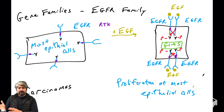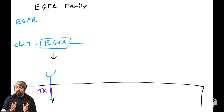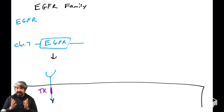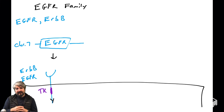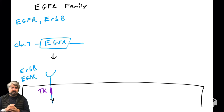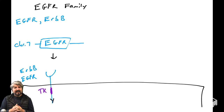The first thing to introduce — not to confuse, but just to explain how it is in science — is that sometimes the same thing has multiple names. For example, EGFR has another name called ERBB.